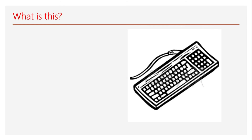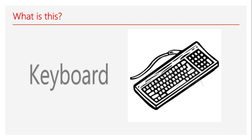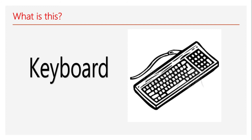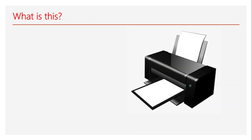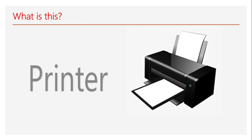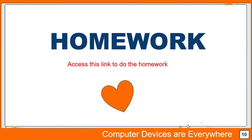What about this one? Easy — yes, keyboard! What is this? Keyboard — excellent! And what is this? Of course you know — mouse! What about this one? Printer! We use the printer for what? For printing paper. Printer.